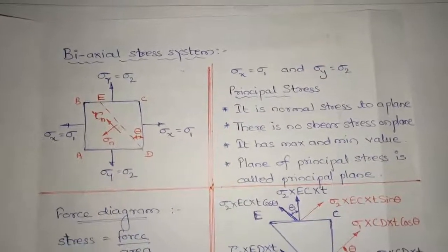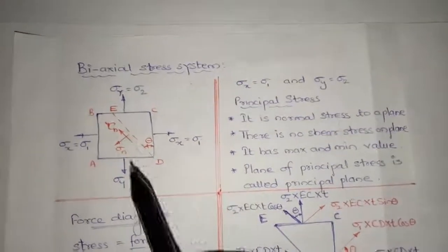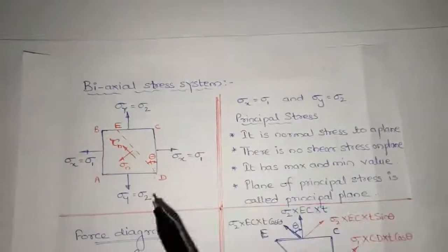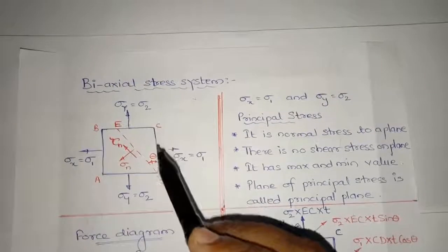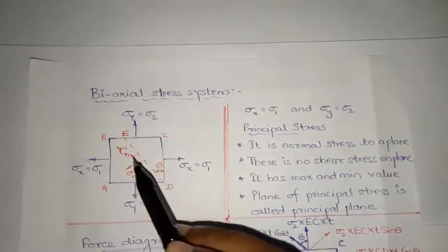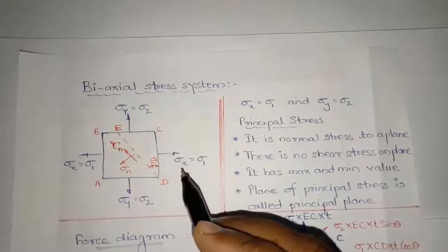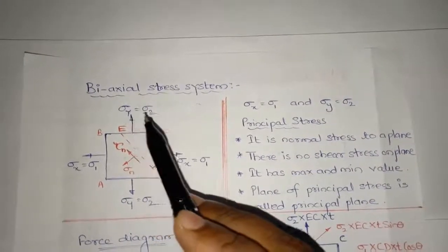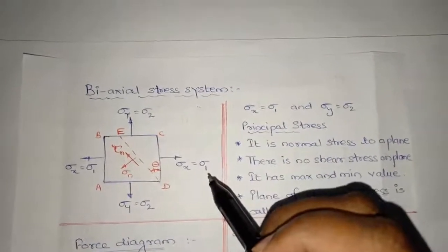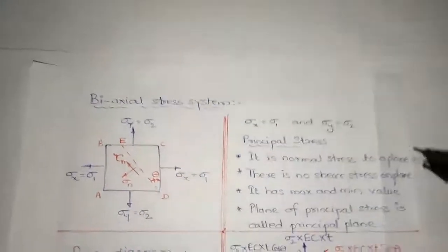In this lecture we are going to discuss the derivation on biaxial stress system. Bi means two, axial means along the axis. Here we have an element ABCD, and along the x and y axis, stress is acting. Sigma x is equal to sigma 1, sigma y is equal to sigma 2. Sigma 1 and sigma 2 are used to indicate principal stress.